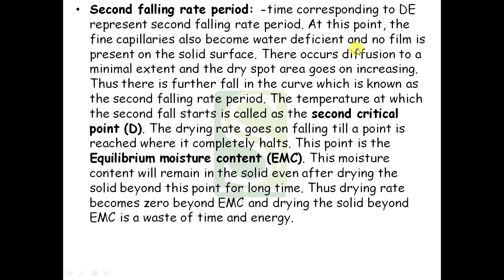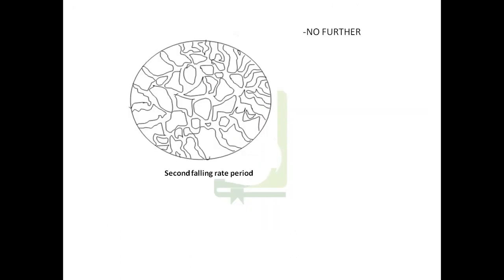Next comes the second falling rate period, corresponding to point D in the graph. At this point the fine capillaries also become water-deficient and no film is present on the solid surface. Diffusion occurs only to a minimal extent and the dry spot area keeps increasing, causing a further fall in the drying rate — this is the second falling rate period. The temperature at which the second falling rate starts is called the second critical point. The drying rate continues to fall until it completely stops at the equilibrium moisture content (EMC).